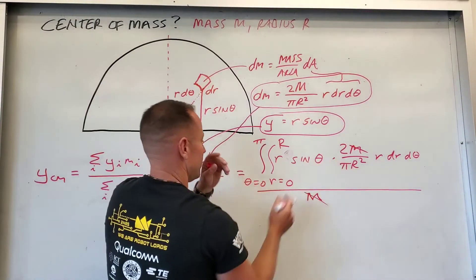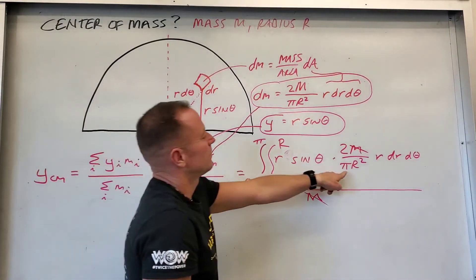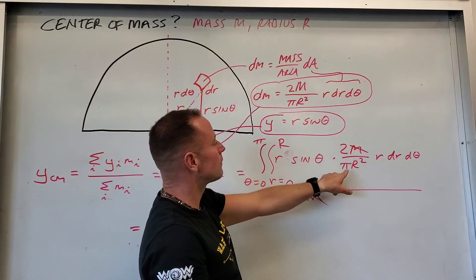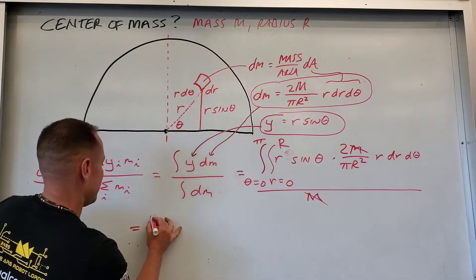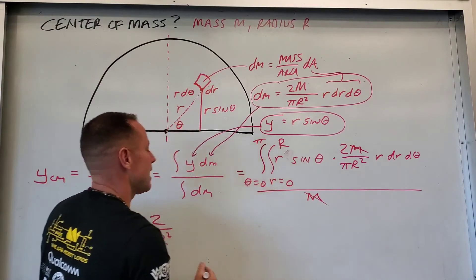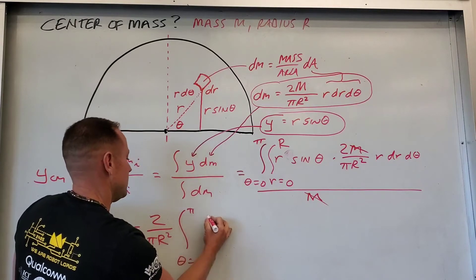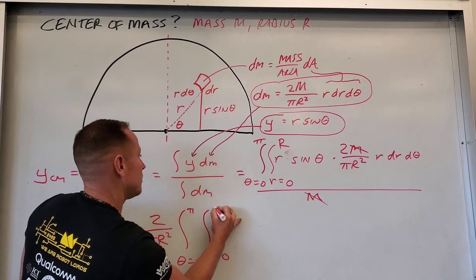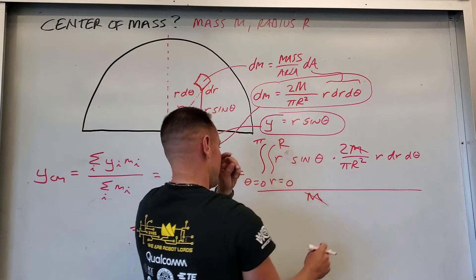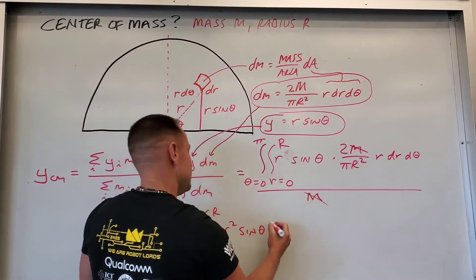And so here we are with the integral over radius and over θ. So first little move, let's just clear constants out of here. So our constants, it looks like we have 2 over π big R squared. So let's just pull that out. 2 over π big R squared. And then we have our quantities that we're integrating over. So we have θ is 0 to π. We have r equals 0 to R. And we're integrating r squared sin θ dr dθ.